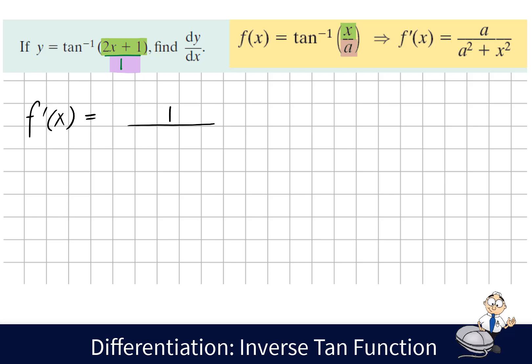If we apply the formula to the ratio as given, subbing 1 in for a and 2x plus 1 in for x into the formula, then we multiply this by the derivative of the inside, that's the 2x plus 1, and the derivative of that is 2.